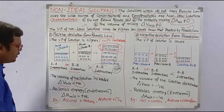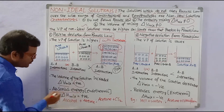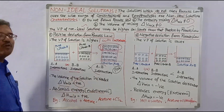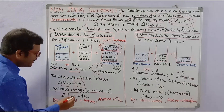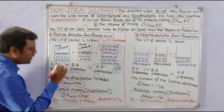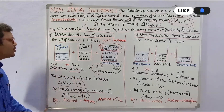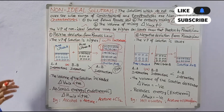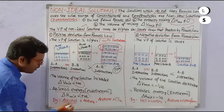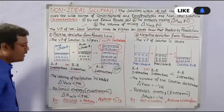This positive deviation absorbs energy — it is an endothermic process, so delta H mix is positive. Examples of positive deviation solutions include alcohol-acetone and acetone-carbon disulfide mixtures.